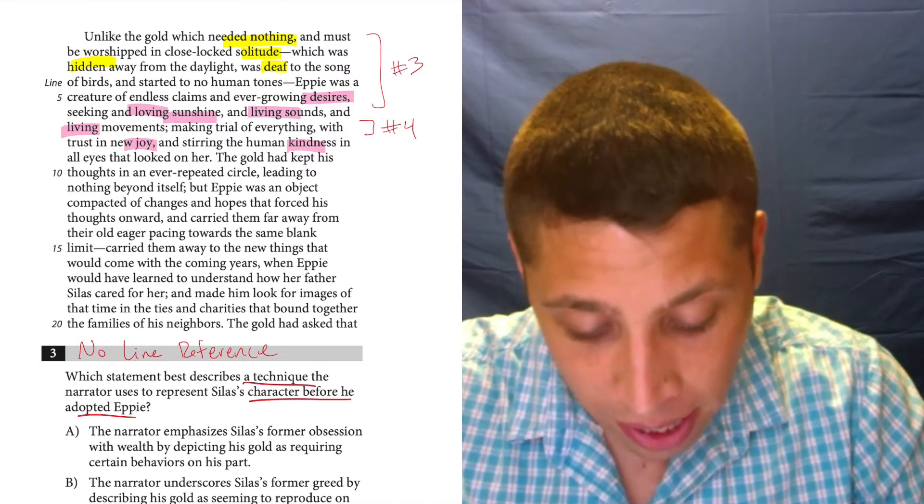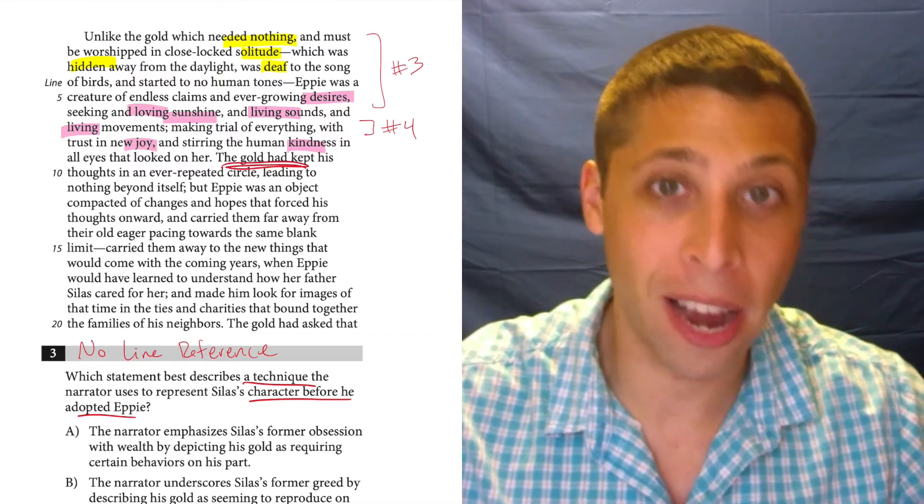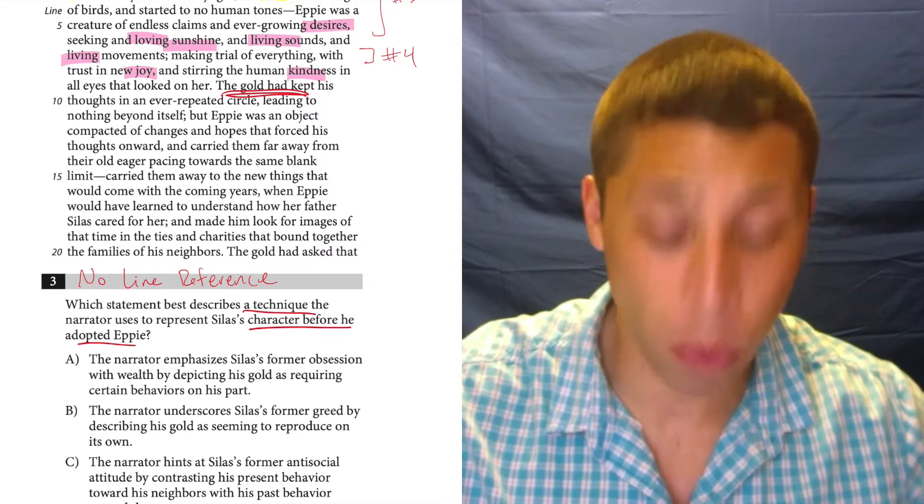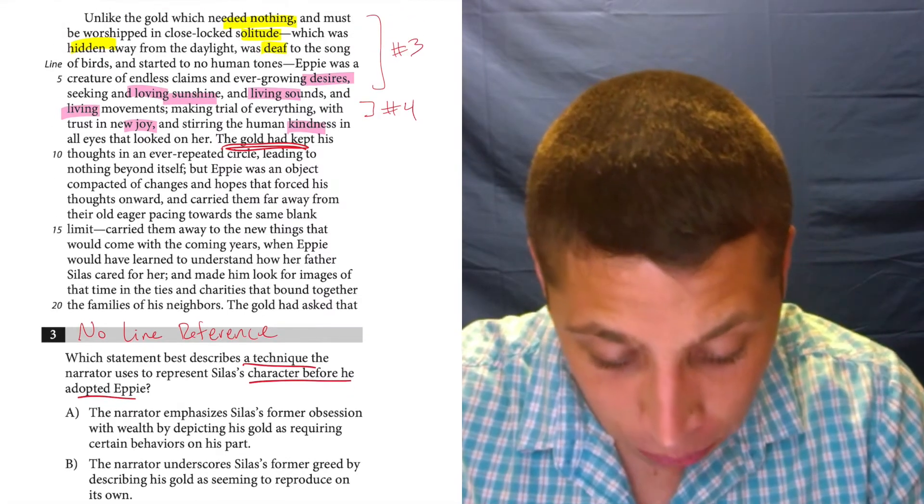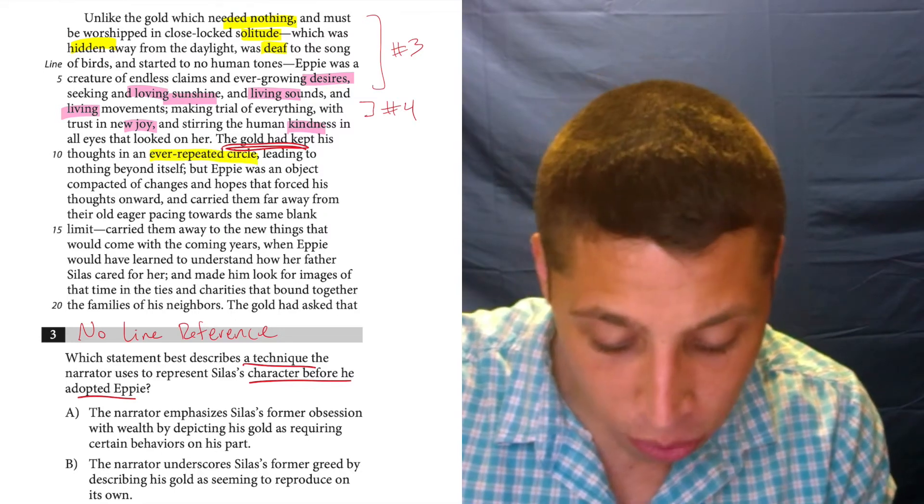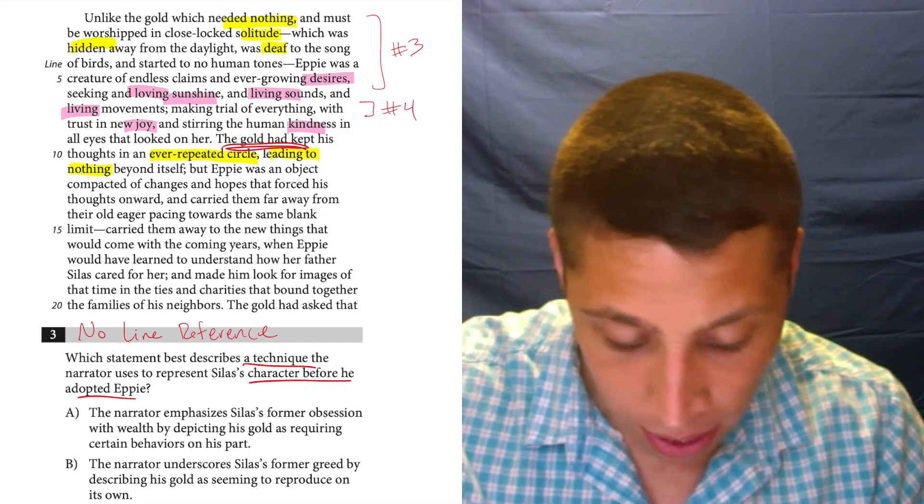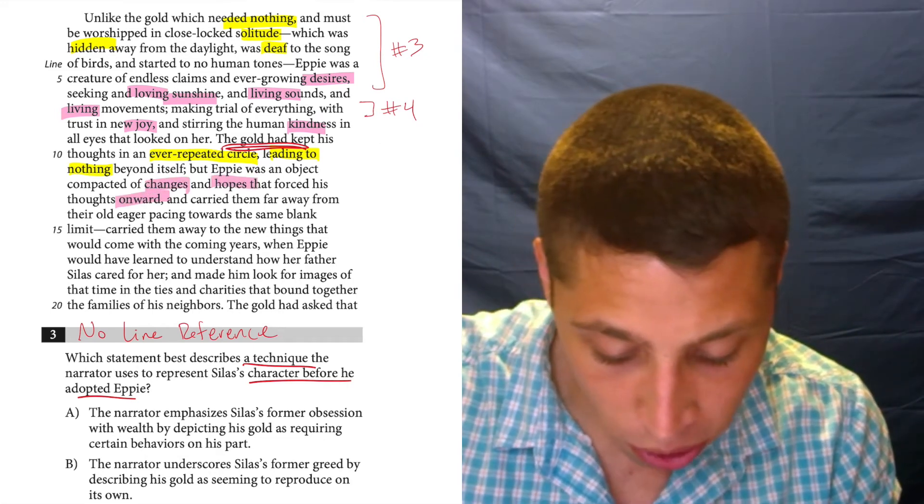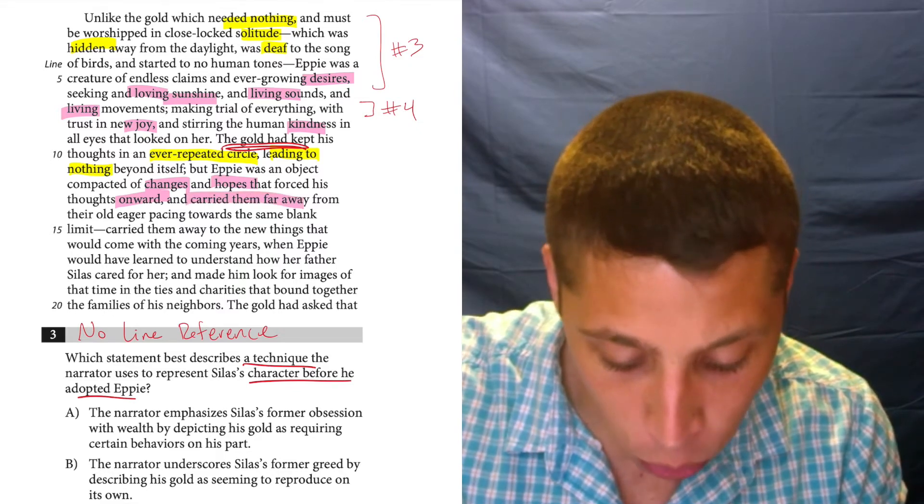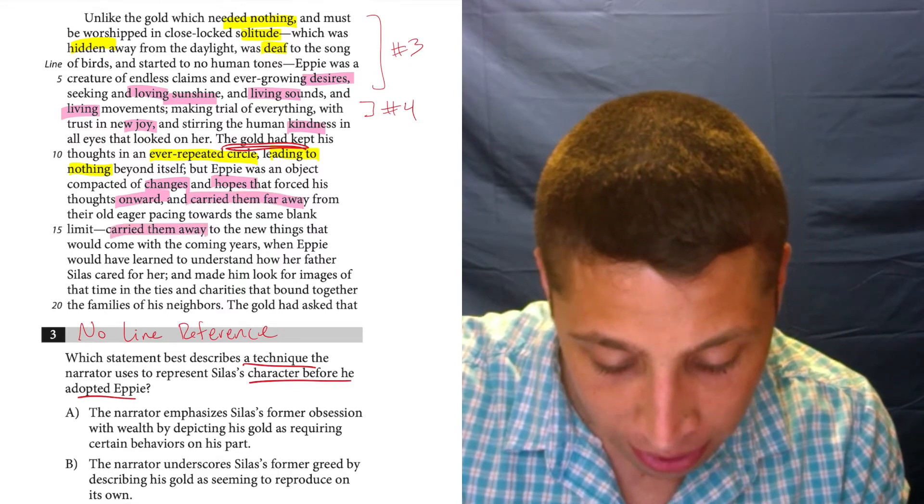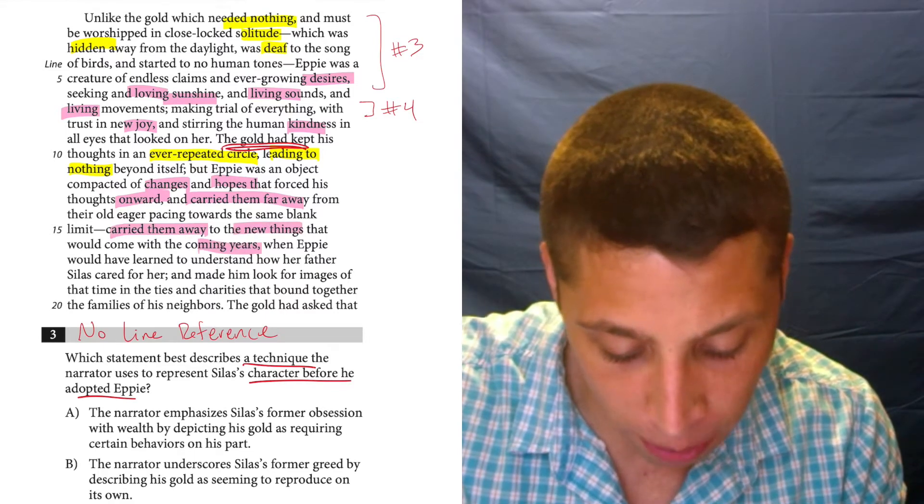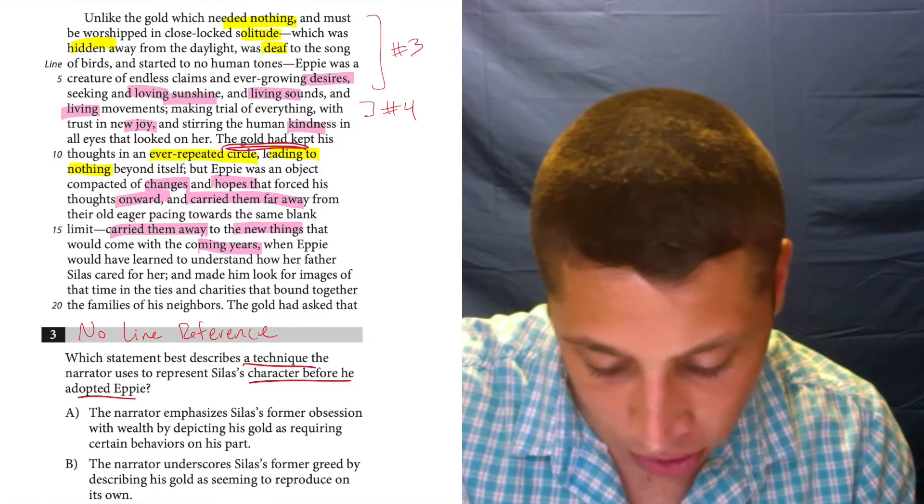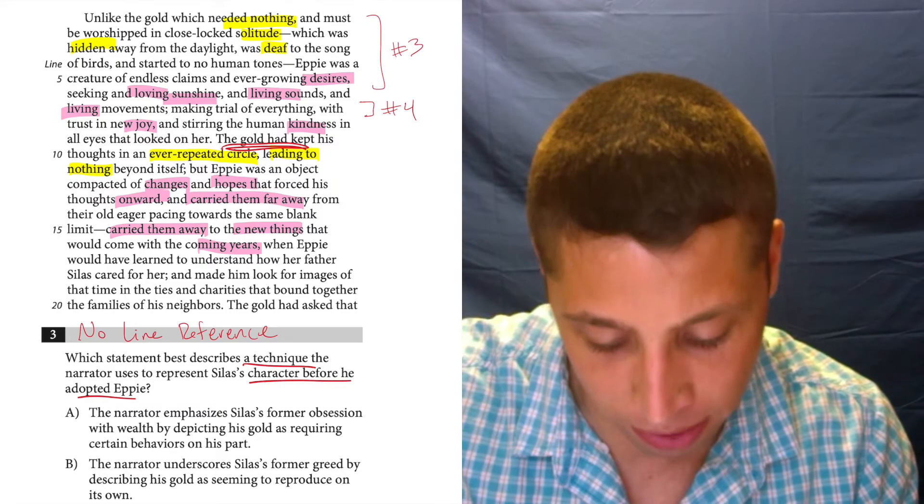We don't read from the start because we don't want to waste our time on unnecessary stuff. And we can use the chronology rule to figure out small places to read when we don't have a line reference. But if it's not enough, we are not prevented from reading more. We always can. And look at the very next line, it says the gold had kept his thoughts. Now we're talking more about the gold and maybe what Silas did before.